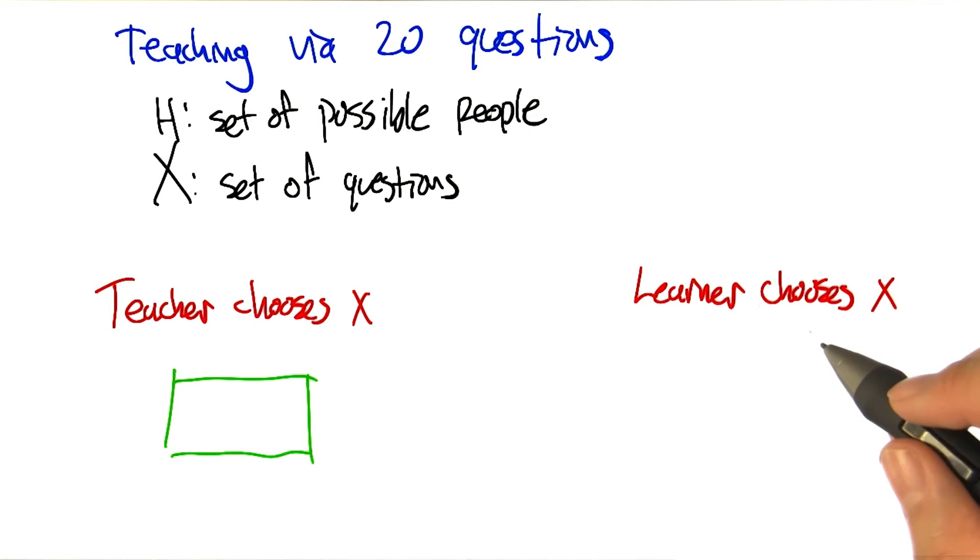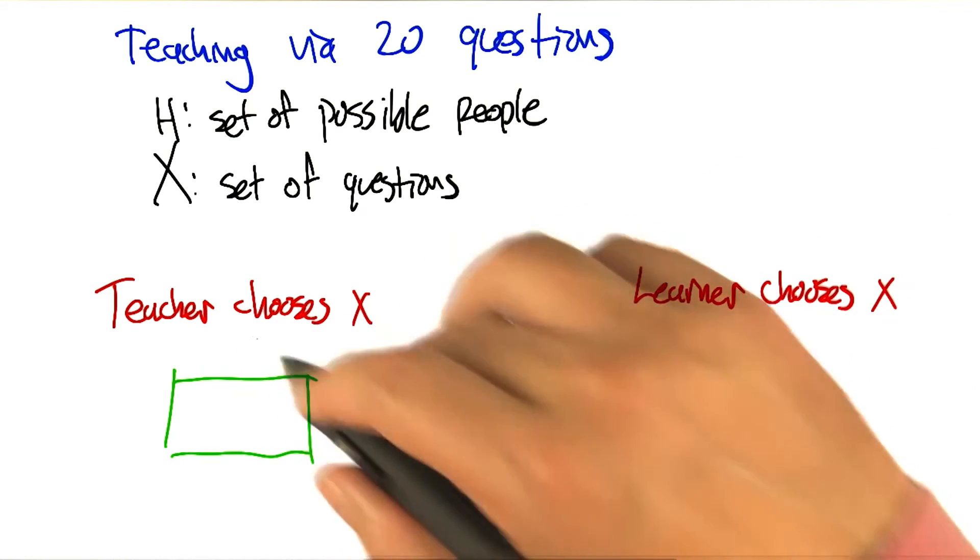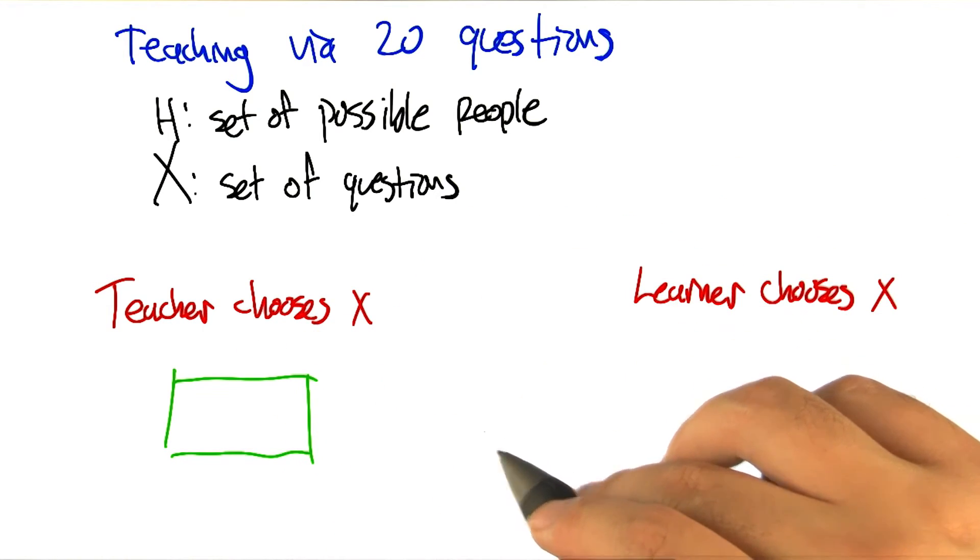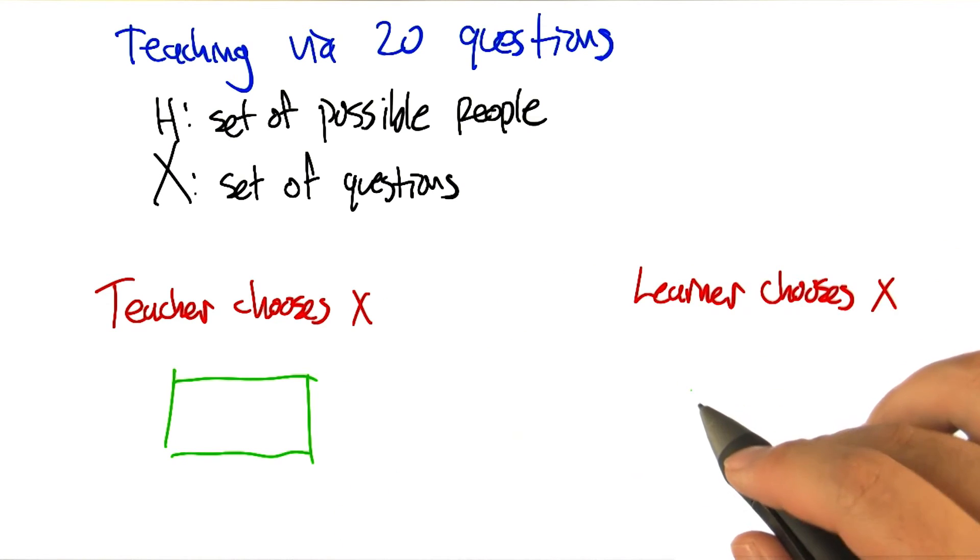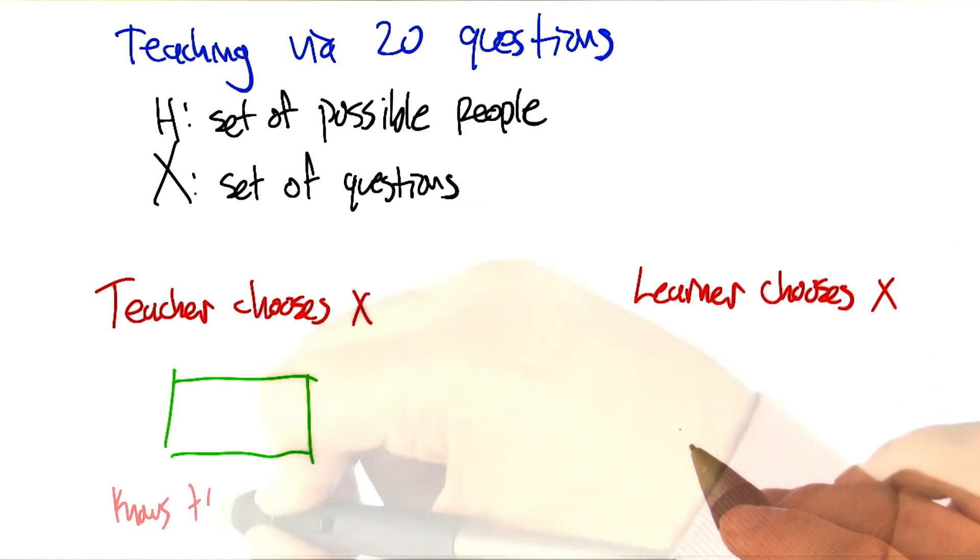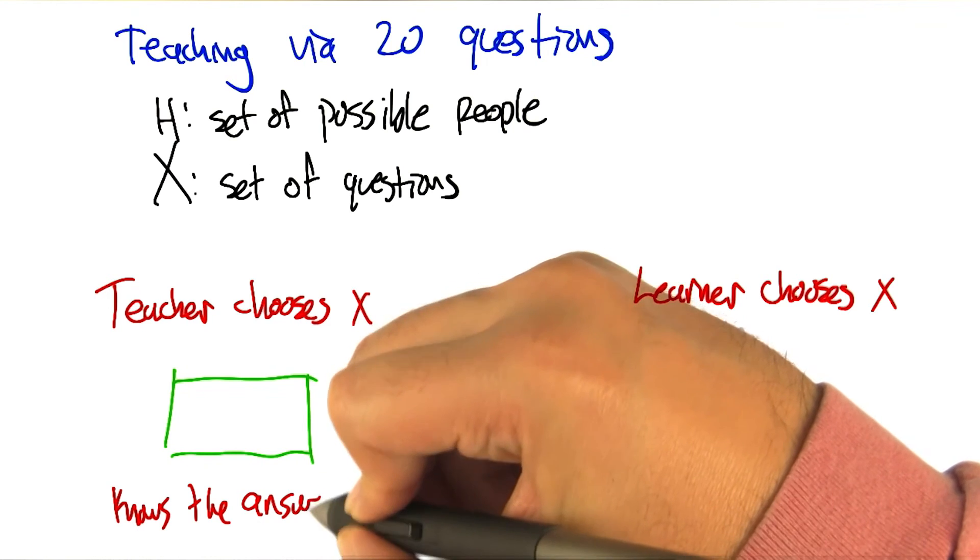And then next we'll look at what happens if the learner is the one asking those questions. So in some sense it doesn't seem like it should make a difference, because in either case the learner is going to ask the question and the teacher is going to answer truthfully. Just in one case the learner has to come up with questions, in the other case the teacher has to come up with questions. So why are these different from each other? What does the teacher have that the learner doesn't have? Well, the teacher actually knows the answer.